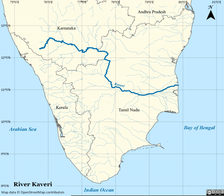Kaveri, also referred to as Pani, is an Indian river flowing through the states of Karnataka and Tamil Nadu. It is the third largest river after Godavari and Krishna in South India, and the largest in Tamil Nadu, which on its course bisects the state into North and South.